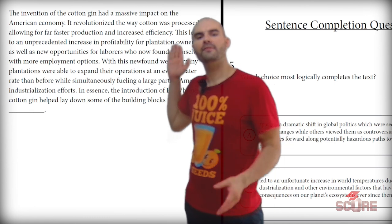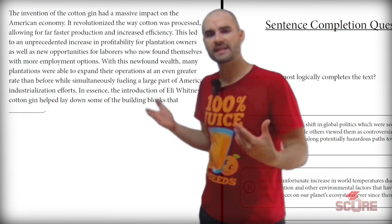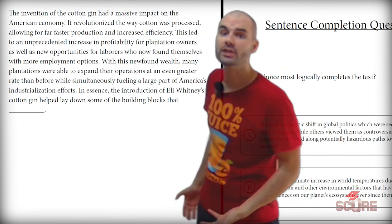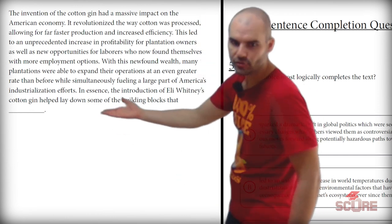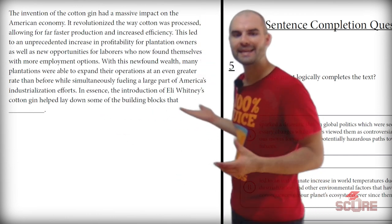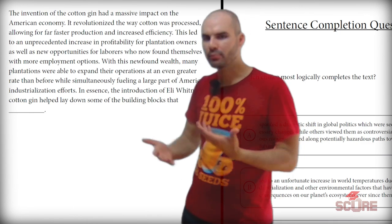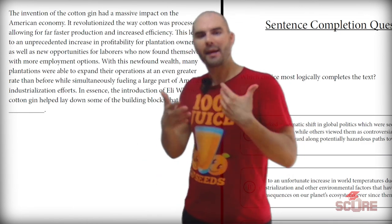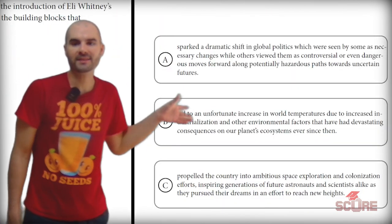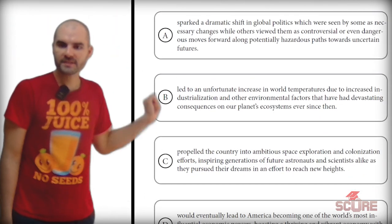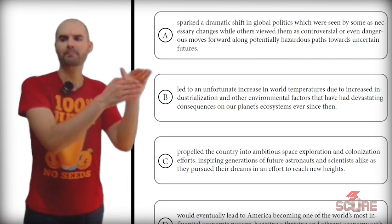Last question. The invention of the cotton gin had a massive impact on the American economy. If you don't know what a cotton gin is, you can read the next sentence — it revolutionized the way cotton was processed, allowing for faster production and increased efficiency. The last sentence says: the introduction of Eli Whitney's cotton gin helped lay down some of the building blocks that... We're talking about an agrarian economy, so I'm expecting something to do with economics. The first option talks about politics — probably wrong. The second says an increase in world temperatures due to industrialization — that's a little too extreme to blame on the cotton gin.